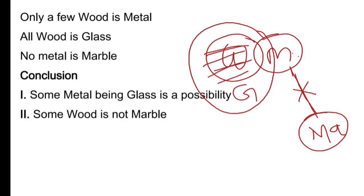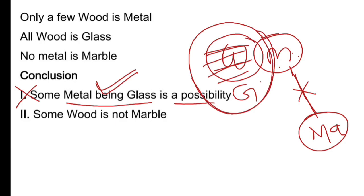Conclusion 1: 'some metal being glass is a possibility.' Kuch metal glass ho sakte hain — possibility nahi, hume diagram se dikh raha hai ki kuch metal glass hai already. Jab bhi koi sahi situation hai aur usse possibility bol rahe ho — woh galat ho jaayega, kyunki woh already sahi hai. Some metal glass hai — ye actual mein hai, toh tum usse possibility nahi bata sakte. Isliye yeh conclusion galat ho jaata hai.